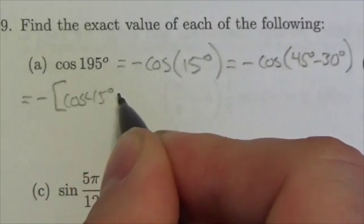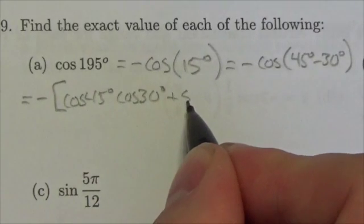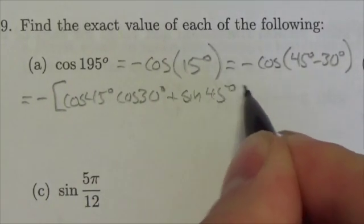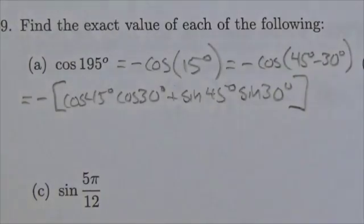But this is going to be broken down into two different expressions. So, this will be the cosine of 45 degrees, cosine of 30 degrees, plus the sine of 45 degrees, sine of 30 degrees. Okay, all within those brackets there.